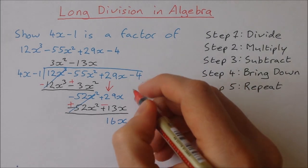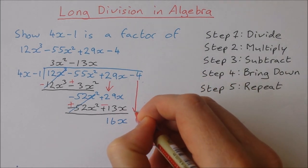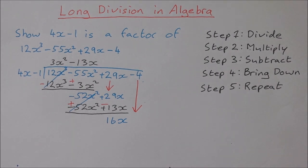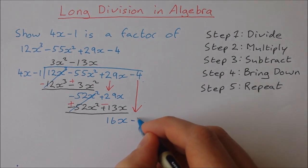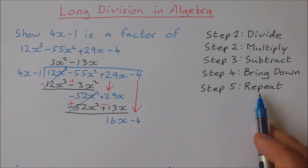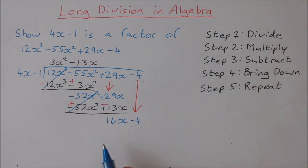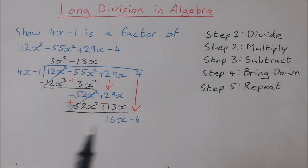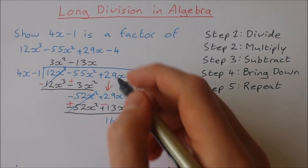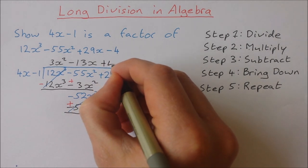Step 4 bring down. I'm going to bring down the last term which is minus 4. And then step 5 repeat. Back up to divide. So it's 16x divided by 4x. 16x divided by 4x is 4.